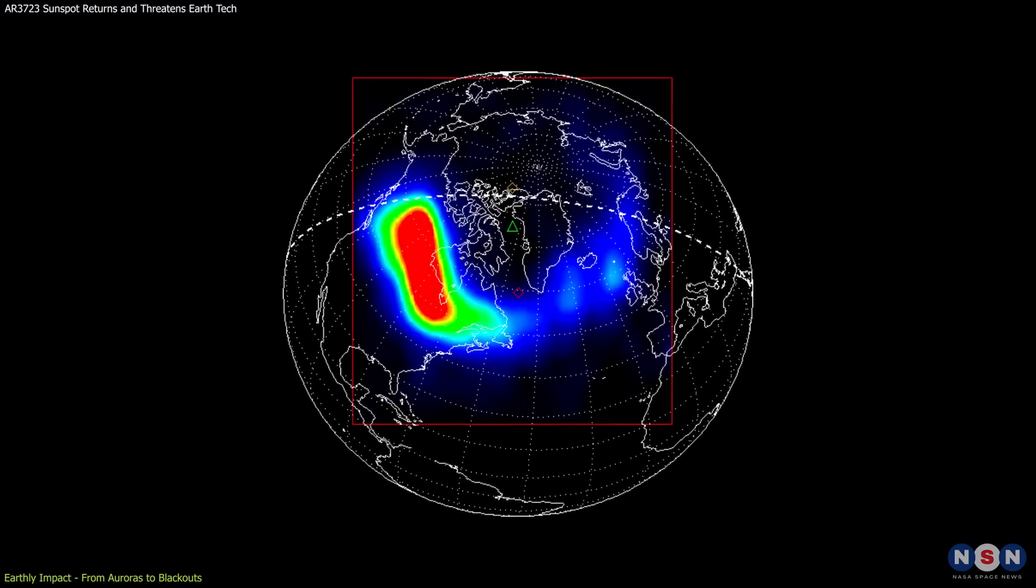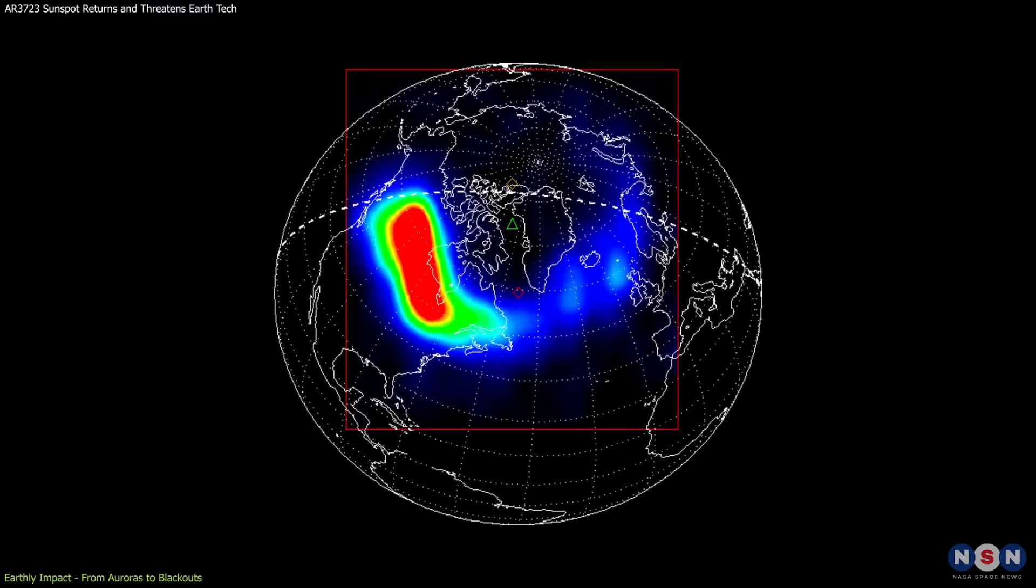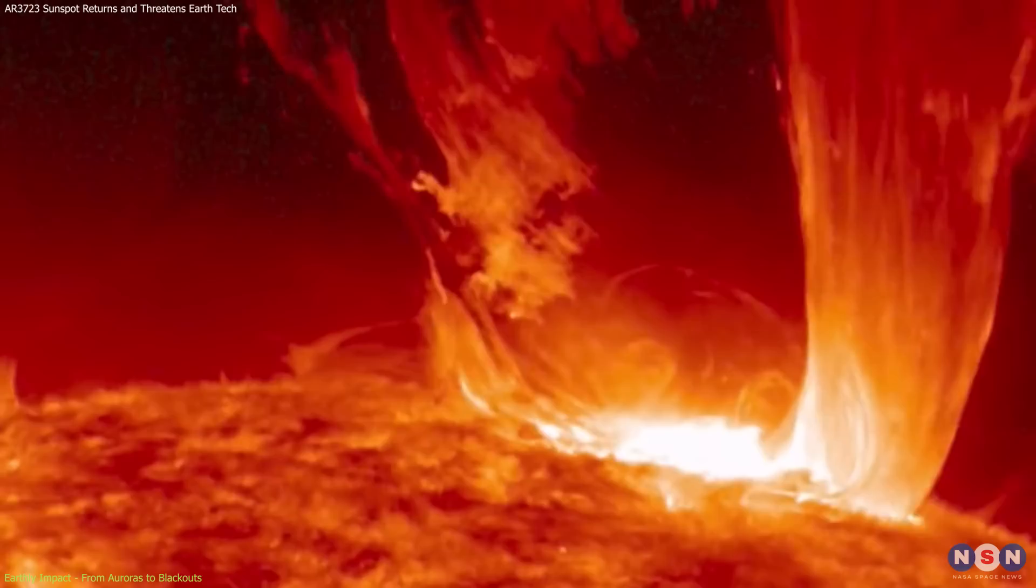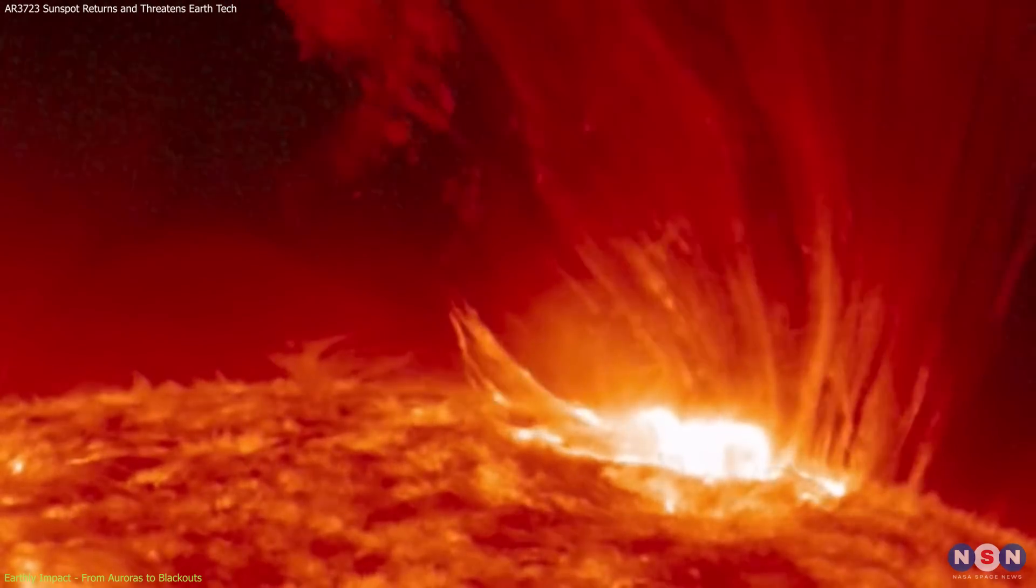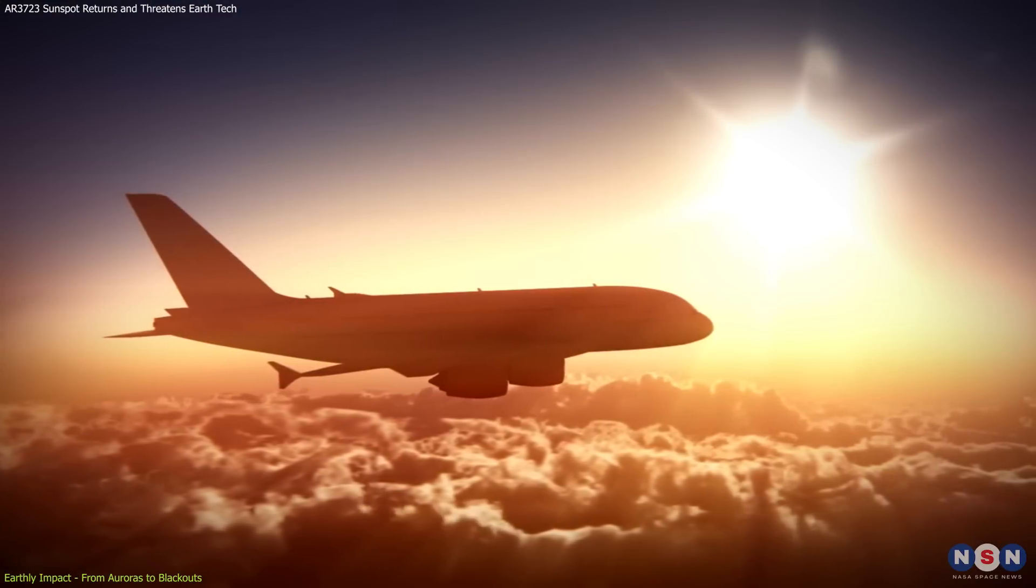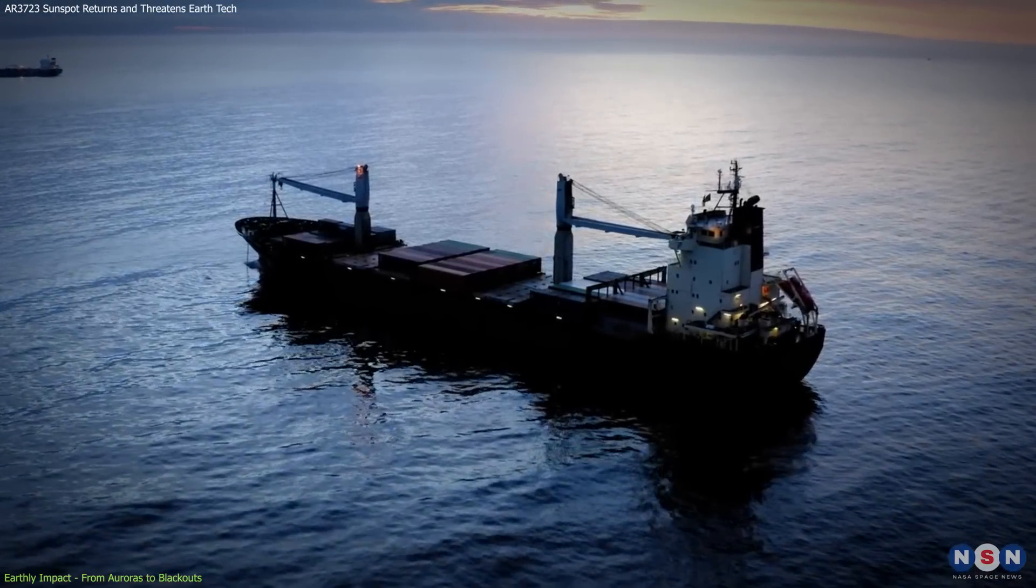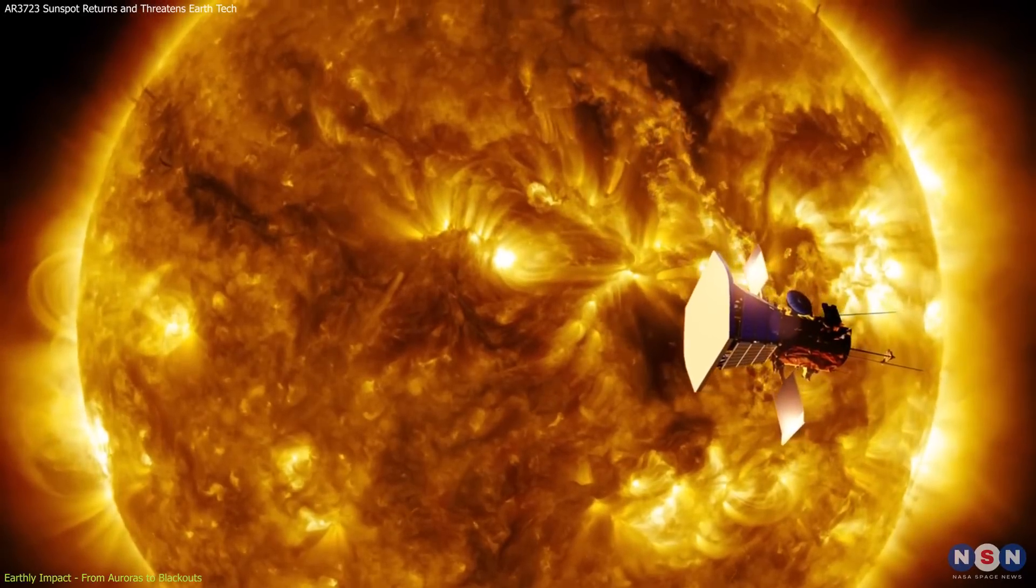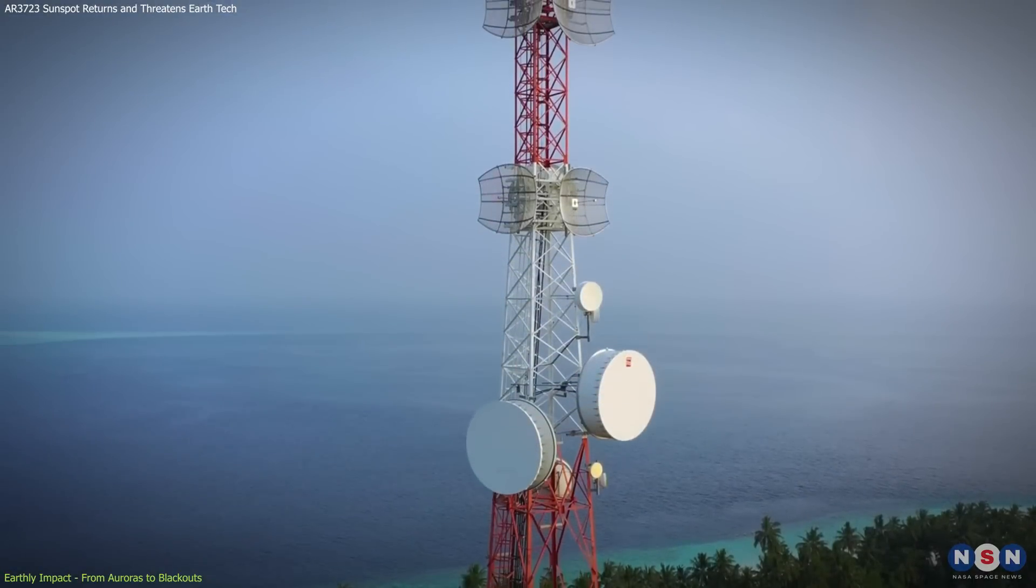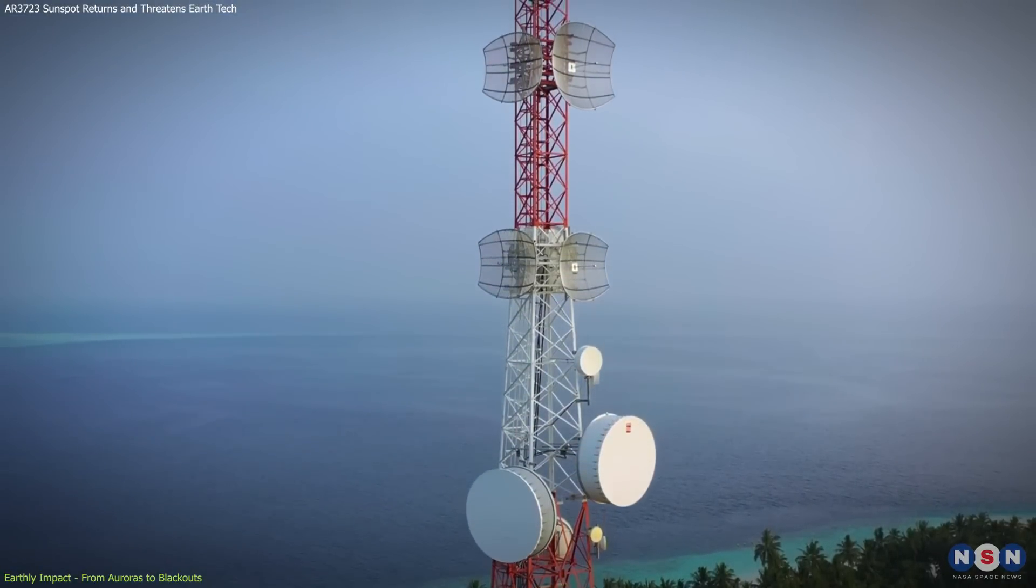The phenomenon known as ionospheric storms arises from these intense bursts of electromagnetic radiation. These storms alter the ionosphere's composition and density, impacting the propagation of high-frequency radio waves crucial for aviation and maritime communication. The resulting challenges necessitate sophisticated management and technological adaptations to maintain the reliability of these critical communication channels.